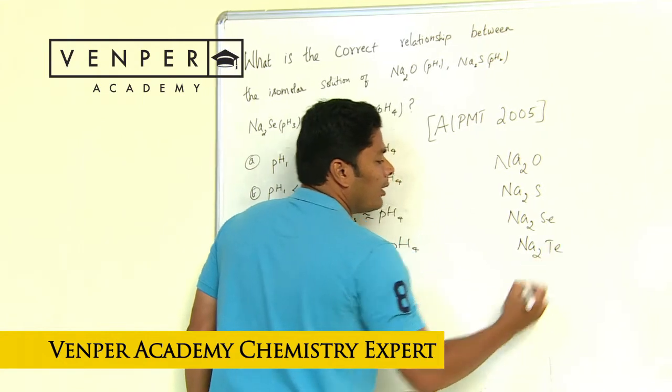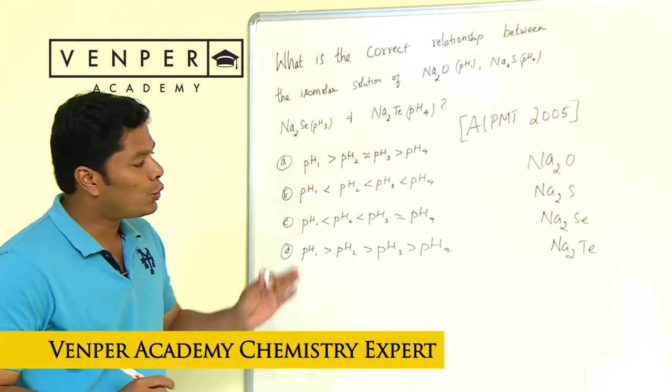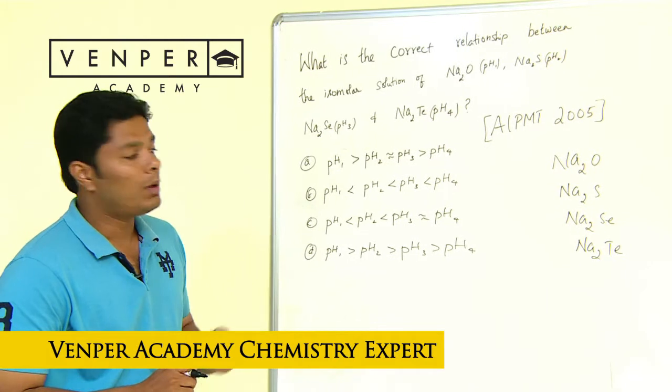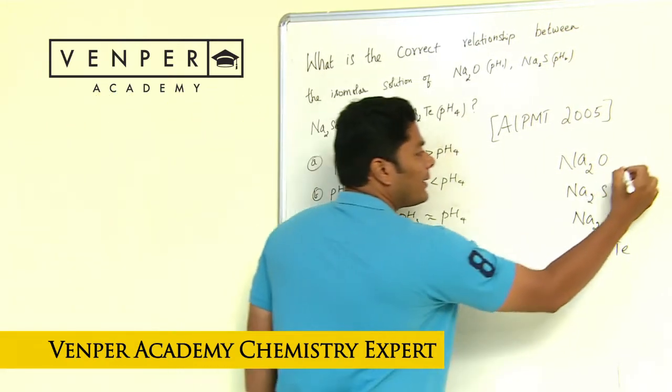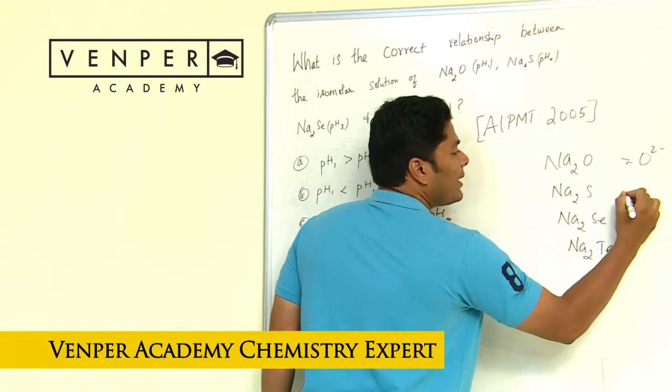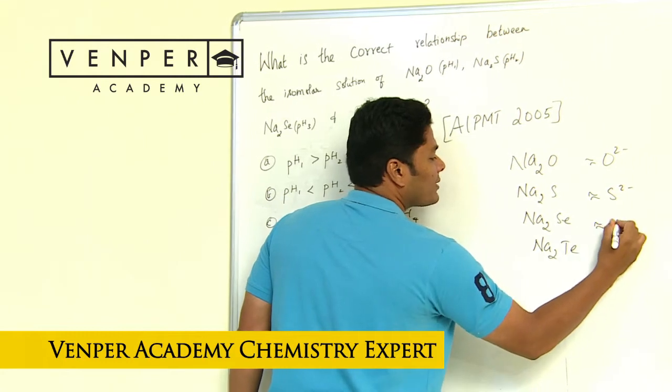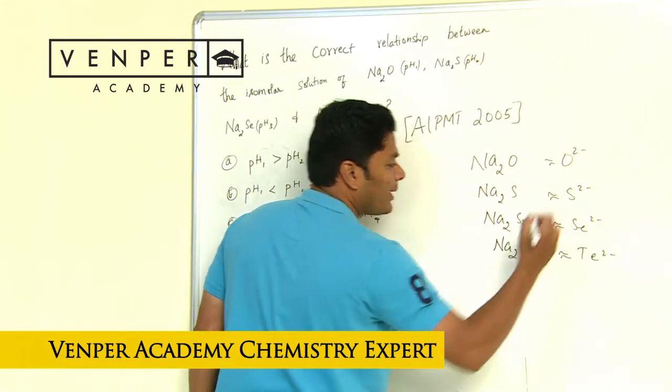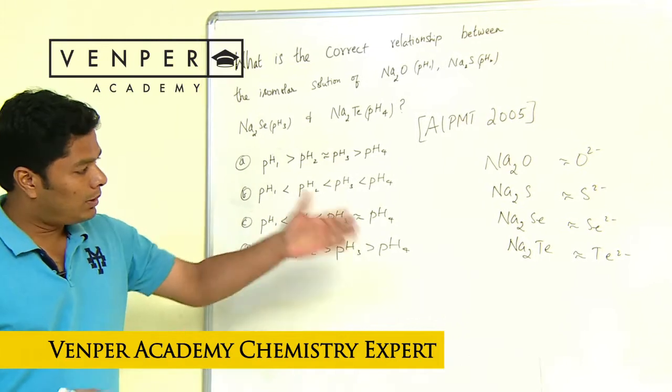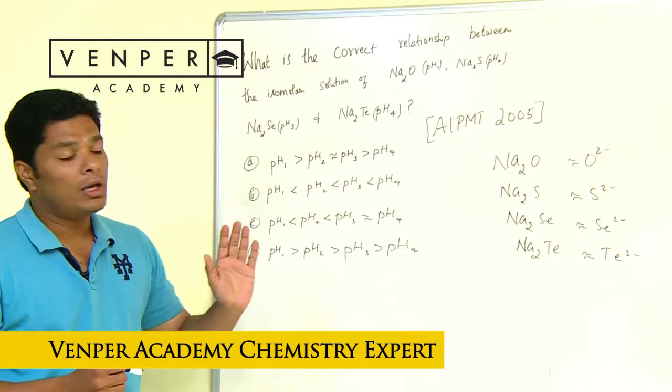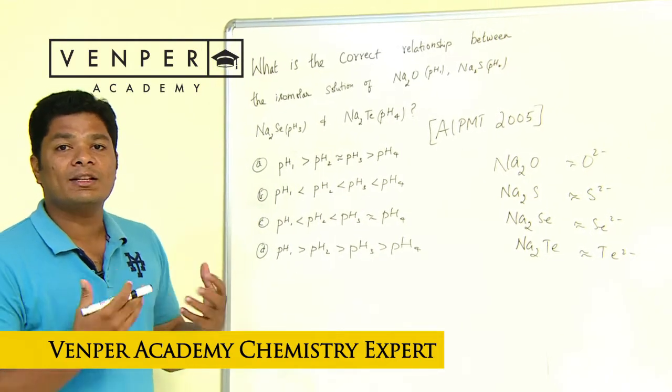Now let's take this one - Na2O, Na2S, Na2Se, Na2Te. These belong to the sodium salts of same group, oxygen group. So we are looking at O2 minus, S2 minus, Se2 minus, and Te2 minus.